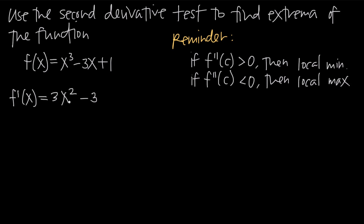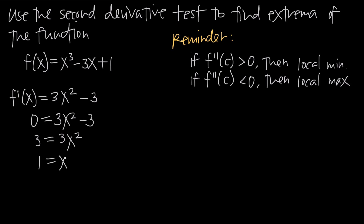Our next step is to find critical points by setting the first derivative equal to zero. So we say 0 equals 3x squared minus 3. Adding 3 to both sides gives 3 equals 3x squared. Dividing both sides by 3 gives 1 equals x squared. Taking the square root of both sides, x equals positive or negative 1. These are our potential critical points.